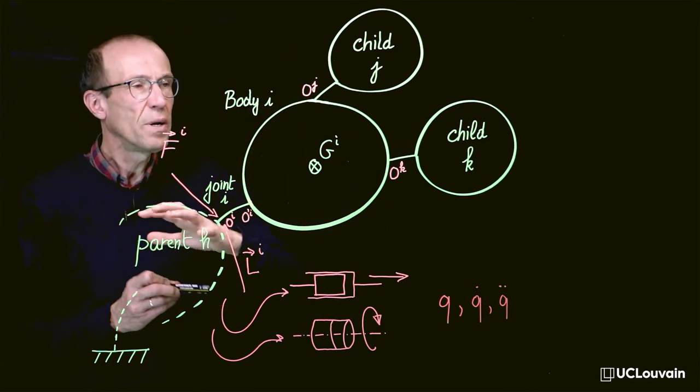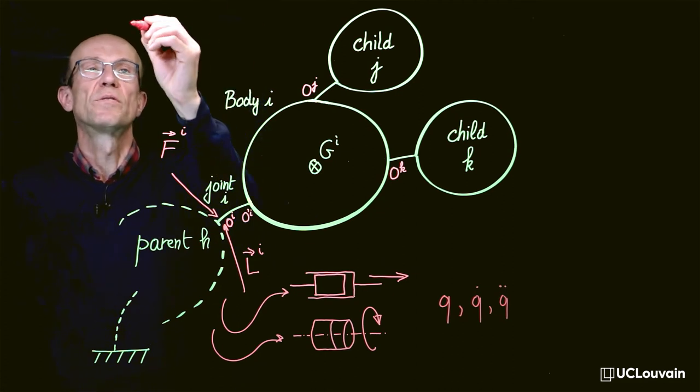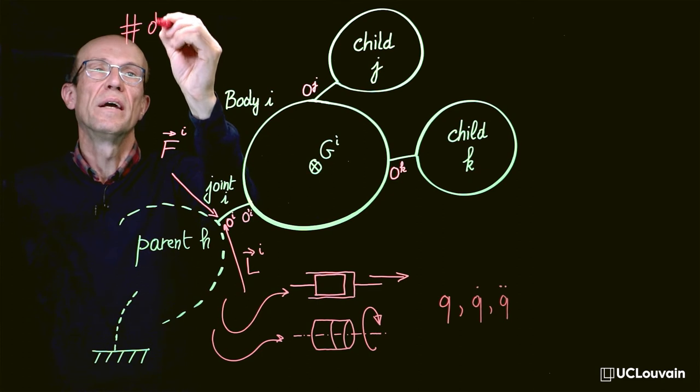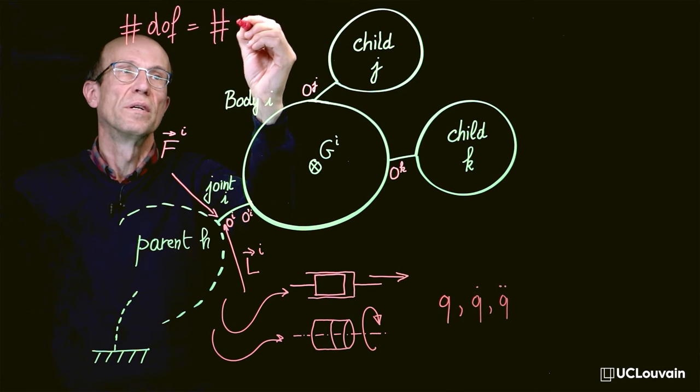For a tree-like multibody system, the number of degrees of freedom will be exactly equal to the number of generalized coordinates.